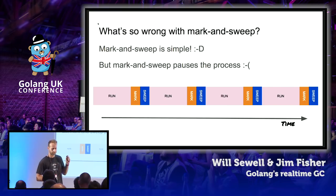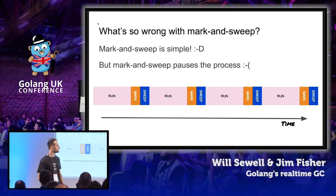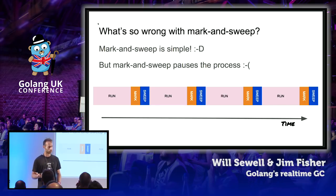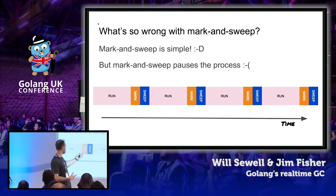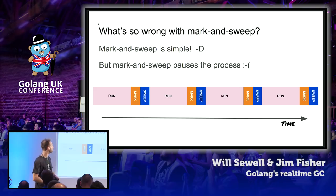Mark and Sweep has one big thing going for it: it is simple — I was able to explain this in a few minutes. It has one big downside, at least at Pusher, which is these pauses to your program. You have run, mark, sweep, run, mark, sweep — and during these mark and sweep phases, nothing is happening that's useful to your end user. You're adding latency to the things that they want to do, and at Pusher, that was an unacceptable property of mark and sweep.